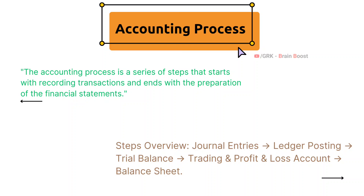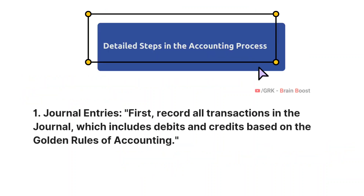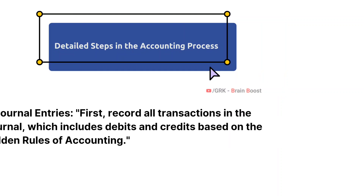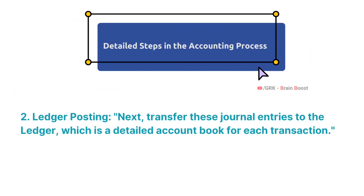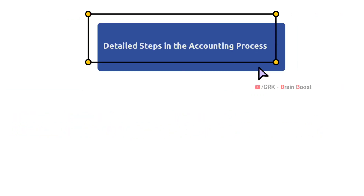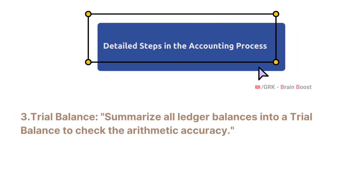At the end we prepare the balance sheet. Now we'll go through the steps in detail. In journal entries, we record all the transactions, which includes debits and credits based on the golden rules of accounting. Next comes ledger postings — all the journal entries which you have recorded will be transferred to the ledger, which is a detailed account book for each transaction.